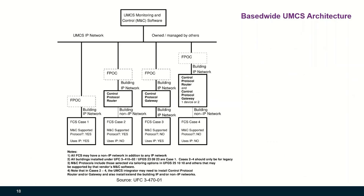Let's look at the base-wide utility monitoring and control system (UMCS) architecture. The UMCS monitoring and control software usually resides on a BAS operator workstation. UMCS also monitors other systems beyond just building automation systems, and is typically owned or managed by others, not facility management. The facility control system (FCS) is basically the building automation system discussed earlier, without the server and operator workstation (or UMCS front-end). The building control network is called the building IP network in this architecture.